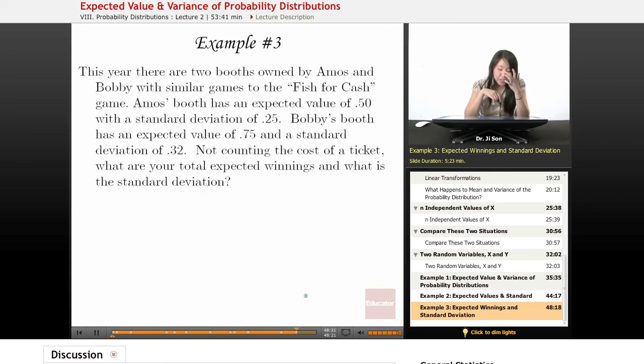Example 3. This year there are two booths owned by Amos and Bobby with similar games to the Fish for Cash game. Amos's booth has an expected value of 0.50 with a standard deviation of 0.25. Bobby's booth has an expected value of 0.75 and a standard deviation of 0.32.